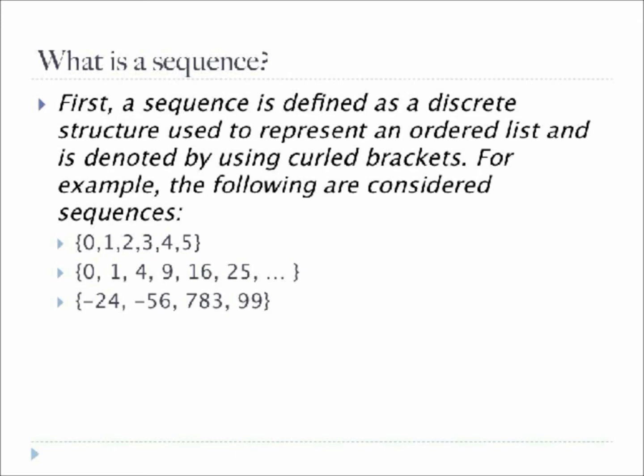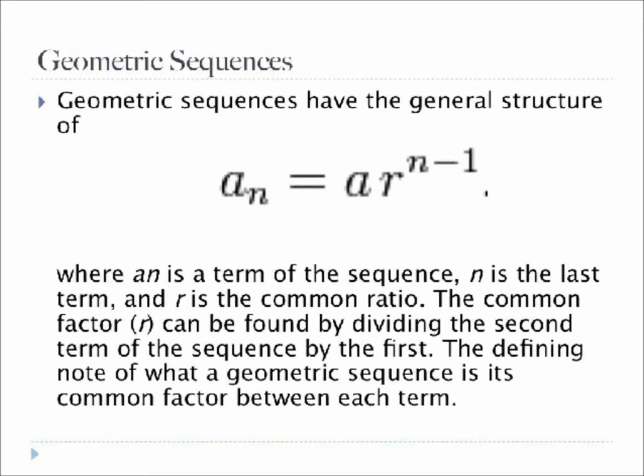One of the common patterns has been given a name, it's called the geometric sequence. Geometric sequences have the general structure of a_n equals a times r to the n minus 1, where a_n is a term of the sequence, n is the last term, and r is the common ratio. The common factor r can be found by dividing the second term of the sequence by the first. This common factor between each term is the defining note of a geometric sequence.